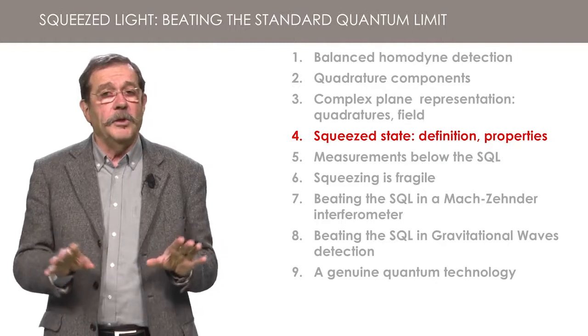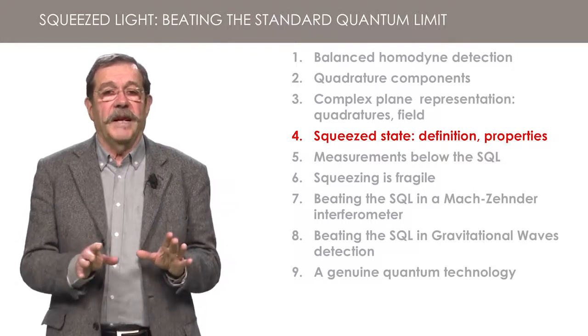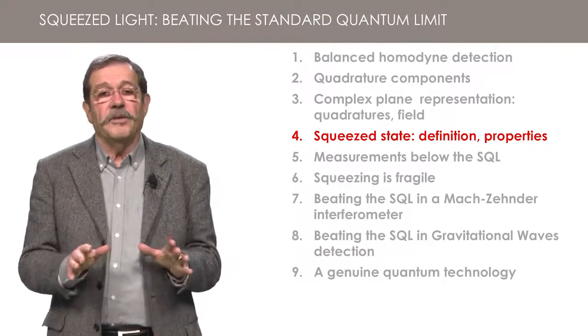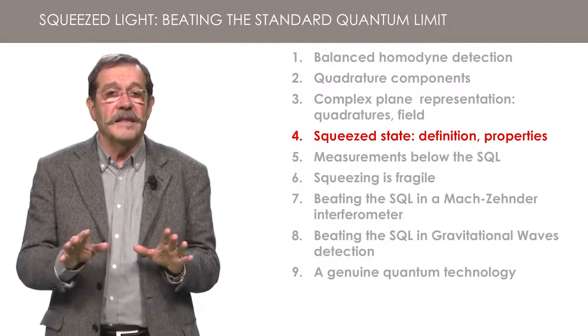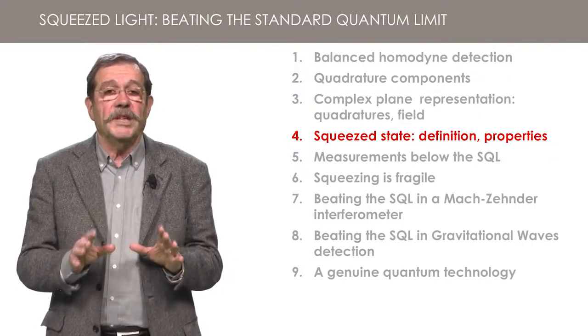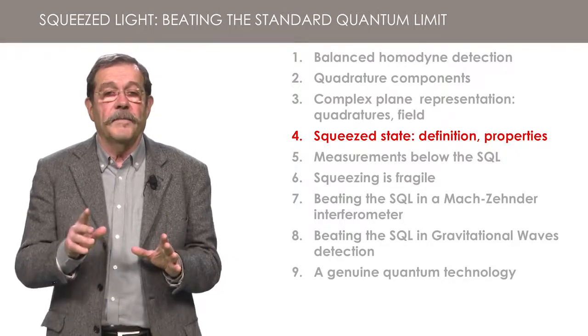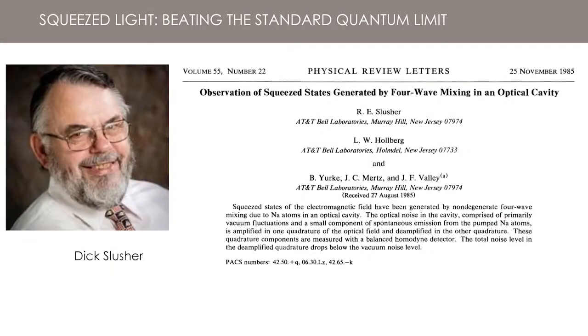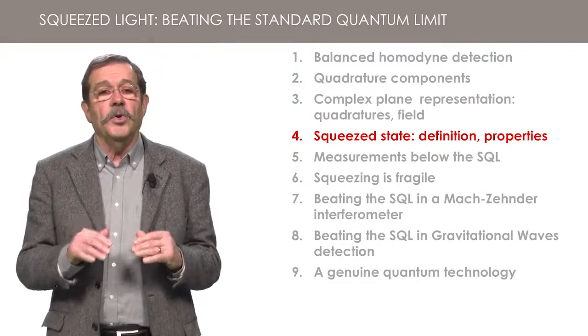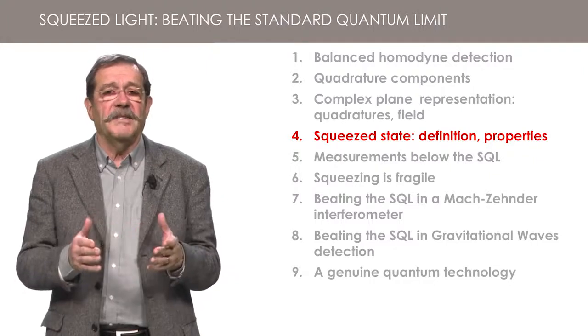I will not tell you here how to produce squeezed states of light. Let me just mention that such states are not found in usual sources of light, and producing such states was an important subject of research in the early 1980s. A first success was obtained in 1985 by Dick Slusher and his team at Bell Labs, soon followed by several other groups. They all used some kind of non-linear optics effect.